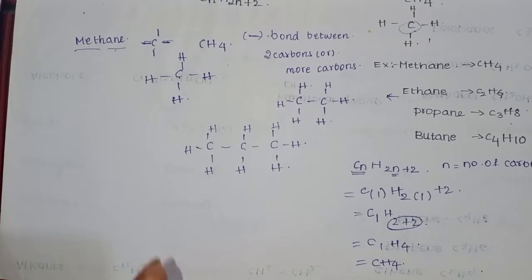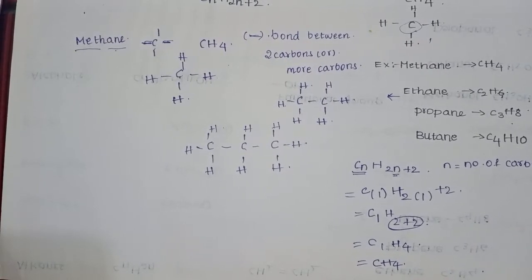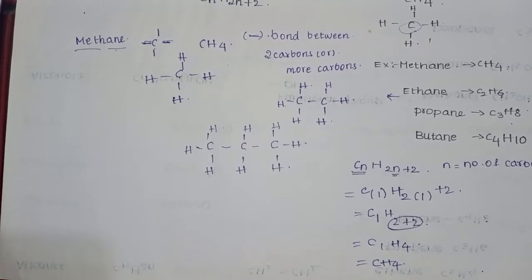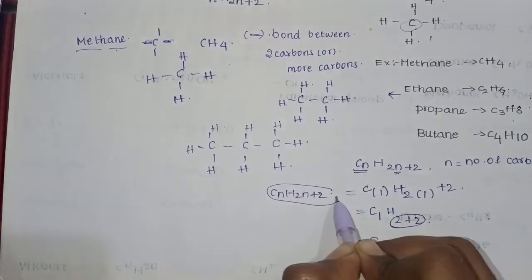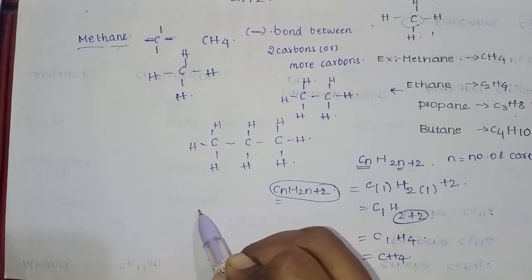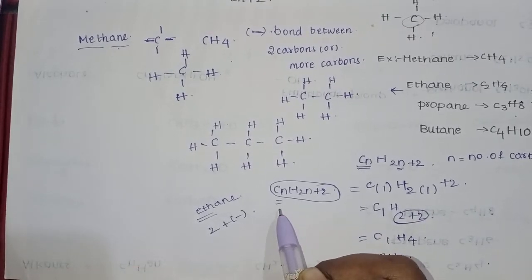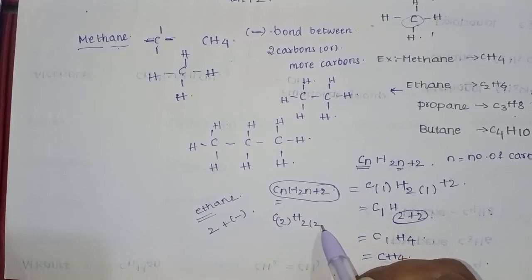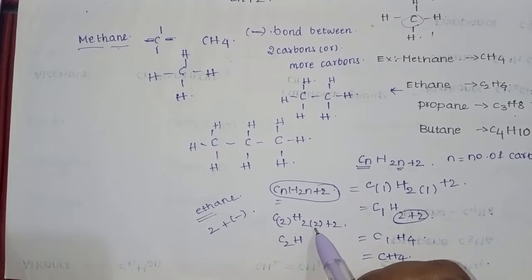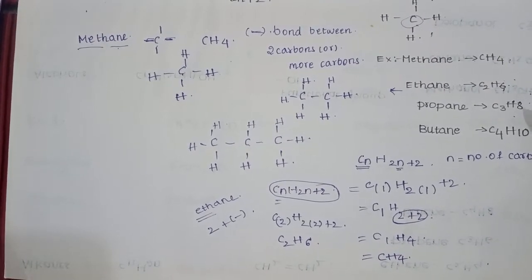Let's go on with the same method. Next ethane. Ethane has two carbons with hydrogens, all are single bonds. Ethane's molecular formula is C2H6. For ethane, using the formula CnH2n+2, ethane has two carbons with single bond. So N is 2. C2, H into 2 times 2 is 4, plus 2 is 6. So C2H6.